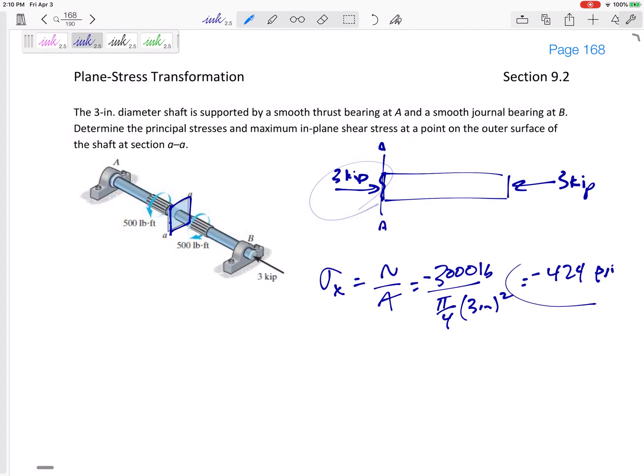This would be 424 psi, but it would be negative because that's in compression. So either specify negative 424 psi or say it is 424 psi in compression. Sigma Y, like I just said, is always going to be zero if we're cutting it right here on this vertical cut.